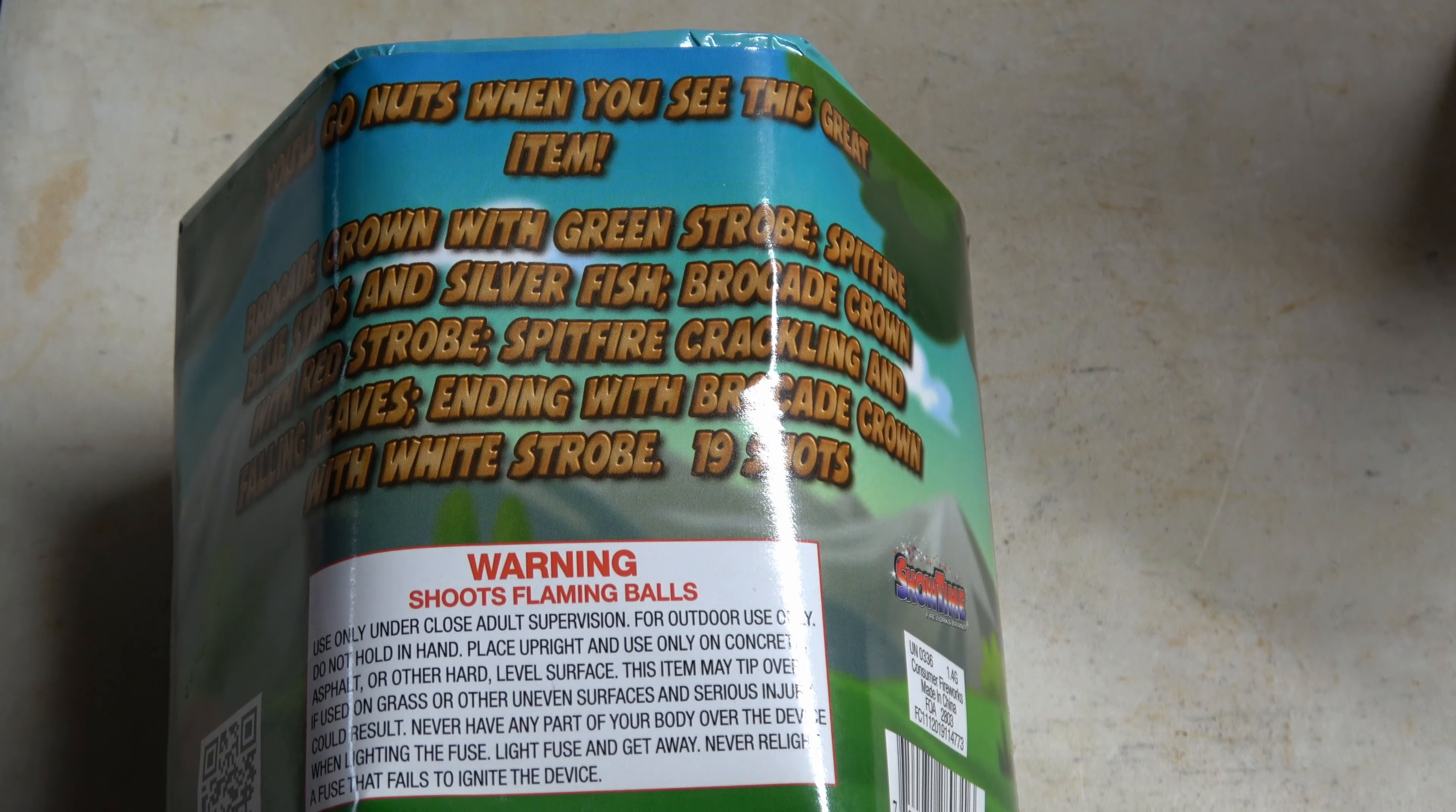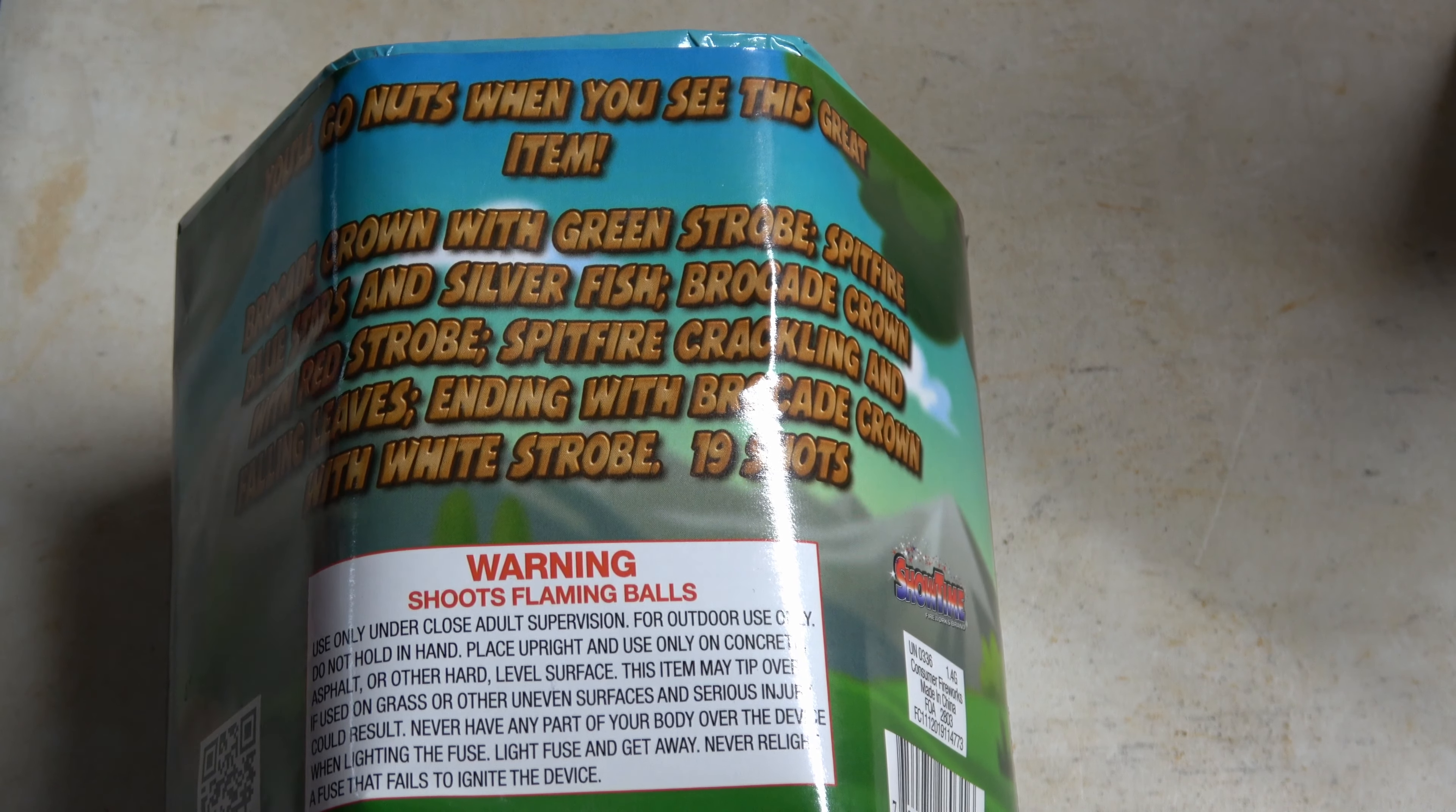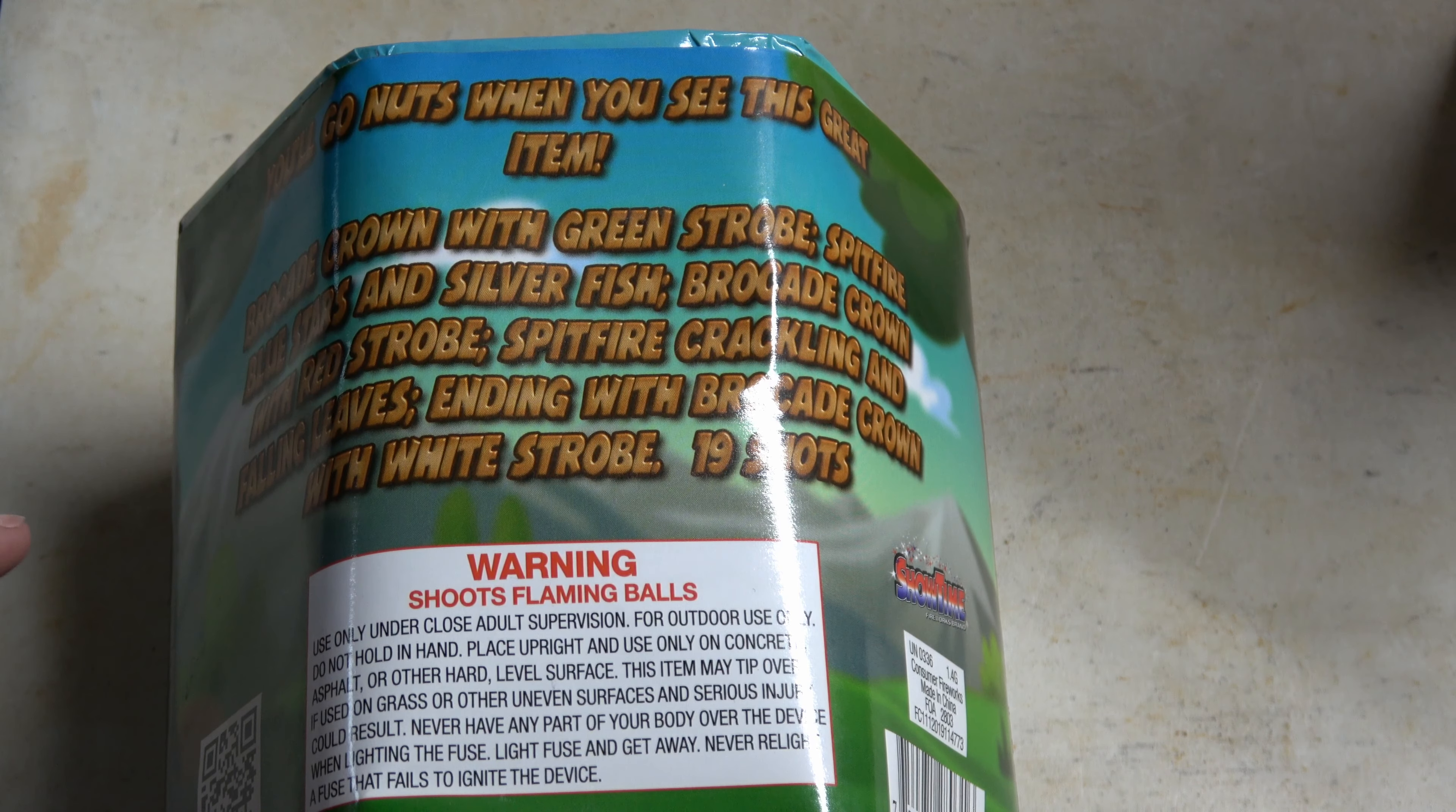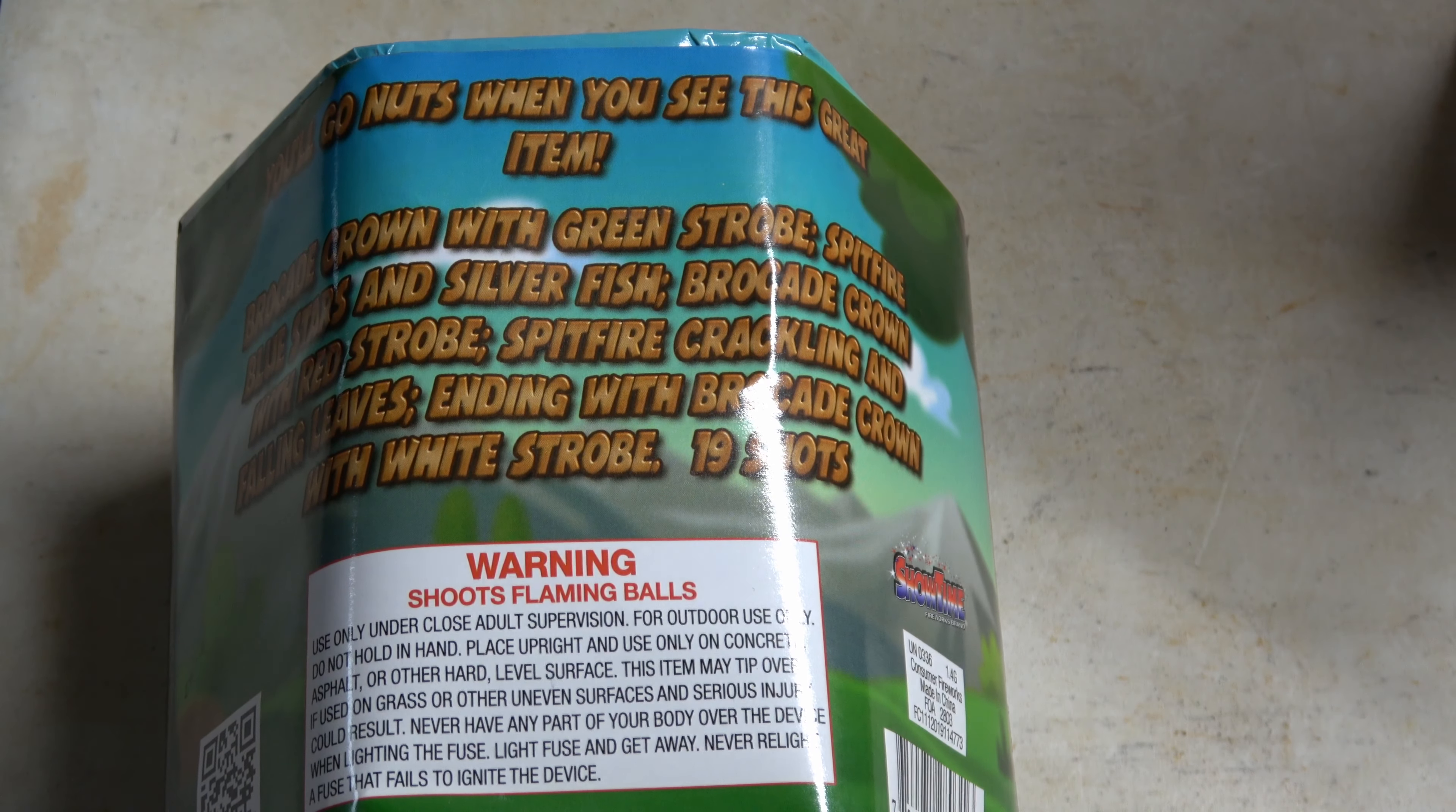Looking at the effects on this one, you'll go nuts when you see this great item. Brocade Crown with Green Strobe, Spitfire Blue Stars and Silver Fish, Brocade Crown with Red Strobe, Spitfire Crackle and Falling Leaves, ending with Brocade Crown with White Strobe. 19 shot.